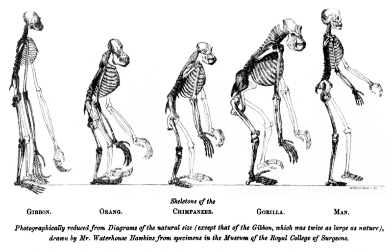Huxley's conclusion that man differs from apes at the level of a family may be compared with the opinion today that the distinction between the great apes and man is at the level of a subfamily, the Homininae, or at the level of a tribe or sub-tribe. The australopithecines separate man from the great apes, and the genus Homo is almost certainly an offshoot of the early australopithecines, upright apes of the wooded savannah. The general opinion today is that man is more closely related to apes than even Huxley thought.